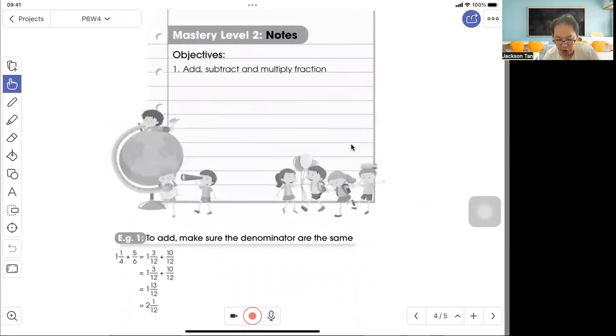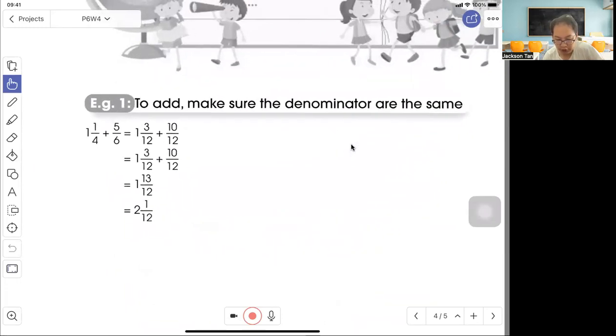Mastery Level 2: Add, subtract, or multiply fractions. Let's look at Example 1. To add fractions, make sure the denominators are the same. The denominator is the number at the bottom. We have 4 and 6. The common multiple is 12.